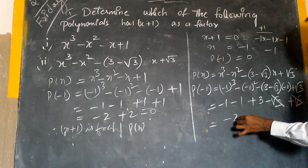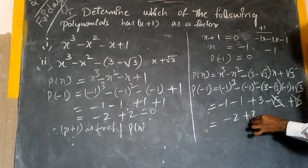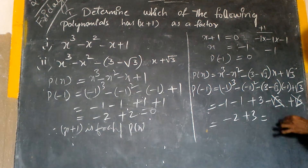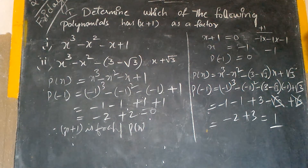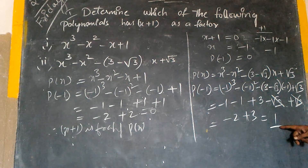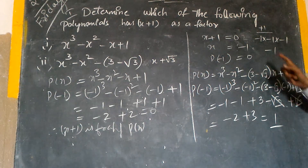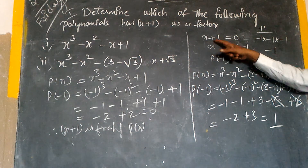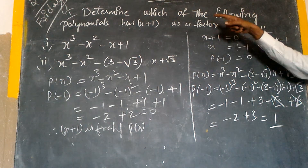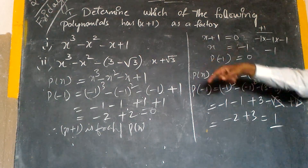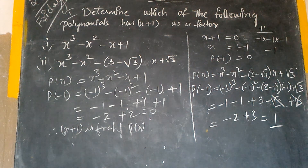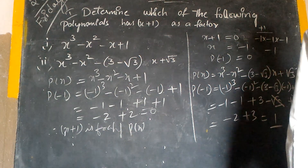So we get minus 2 plus 3, which equals 1. The remainder is not zero. Therefore, x plus 1 is not a factor of this polynomial.